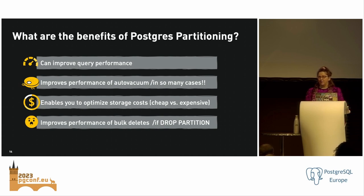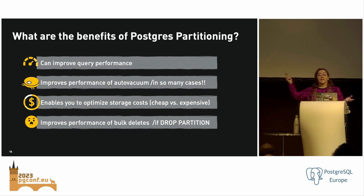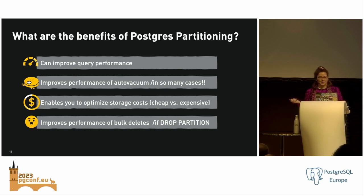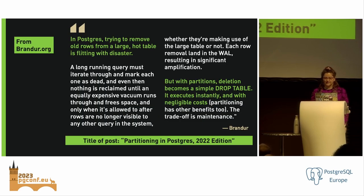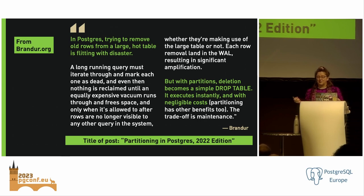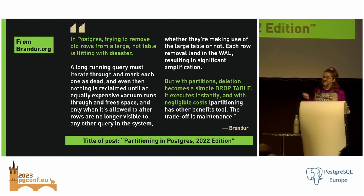Bulk deletes are another area — perhaps the one I find most delightful with partitioning. If you want to expire data that's in older partitions, instead of having to scan the whole table on a regular non-partitioned table to find that old data and delete it, you can just drop the older partition — just drop table, and you're good to go, practically instantaneous. Brander described it so well: 'In Postgres, trying to remove old rows from a large hot table is flirting with disaster. But with partitions, deletion becomes a simple drop table.'